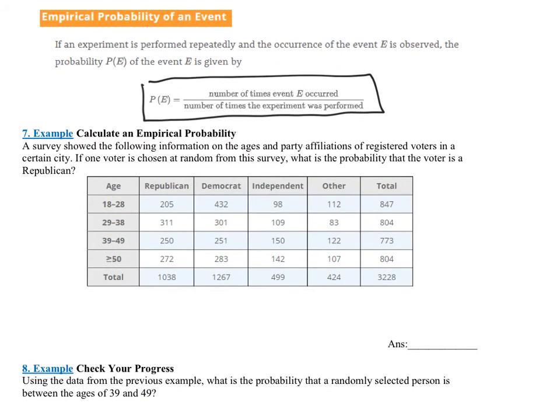When do empirical probabilities come into play? A lot of time when we want to look at statistics or analyze data, we will use empirical probabilities. Let's look at example seven. A survey showed the following information on the ages and party affiliations of registered voters in a certain city. If one voter is chosen at random from the survey, what is the probability that the voter is a Republican?